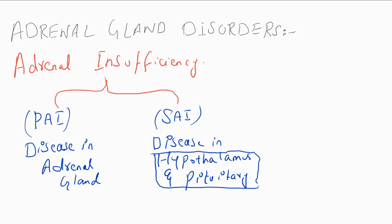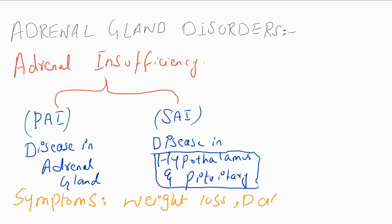The symptoms of adrenal gland insufficiency include weight loss, darkness of skin, and abdominal pain.